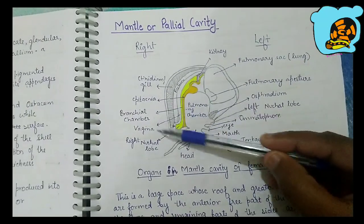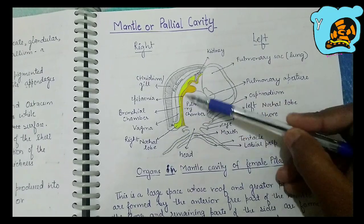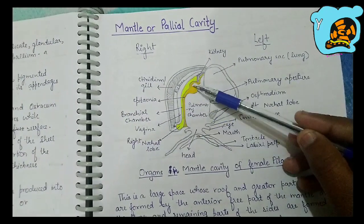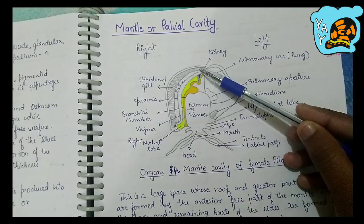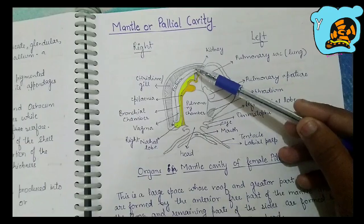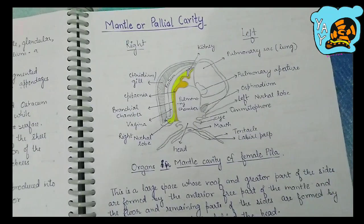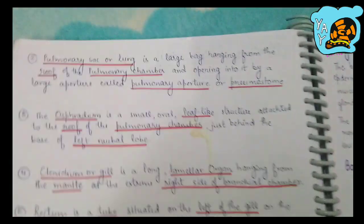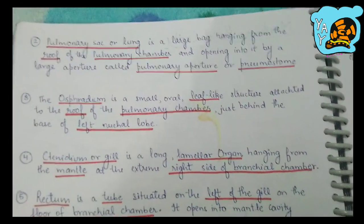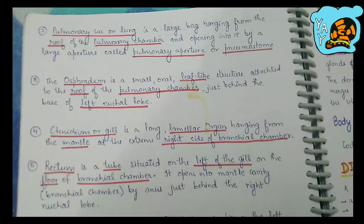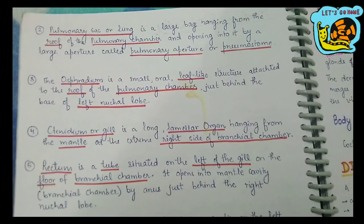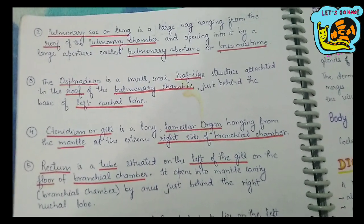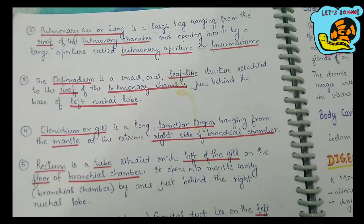This is the anterior end of the cavity, and this is the posterior end of the cavity. So this is about the epithenia — a prominent ridge that divides the mantle cavity into two chambers: the pulmonary chamber and the branchial chamber.